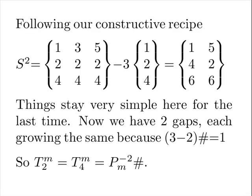Following our constructive recipe, we build S two. Our current prime is three and the next prime is five. Our current primordial is six and the first minor primordial is two. Things stay very simple here for the last time. Now we have two gaps, each growing the same, because three minus two primordial equals one.